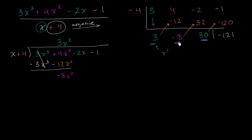We get that negative 8x squared. And you might ask, is this the same negative 8 as the one right over here? Not quite yet — because over here, this negative 8 literally represents negative 8x. This is actually part of our simplification. When we divide this into that, we got 3x squared minus 8x plus 30.